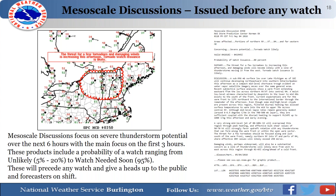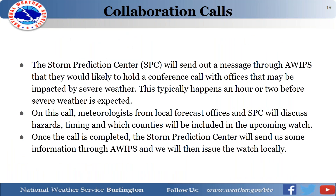The mesoscale discussion focuses on severe thunderstorm potential over the next six hours, with the main focus within the first three hours. It includes a probability of watch issuance ranging from unlikely (5–20%) to watch needed soon (95%). These discussions precede any watch and give a heads-up to both the public and forecasters on shift. The May 4th, 2018 discussion indicated watch issuance was likely over our area because conditions were very conducive for severe weather.